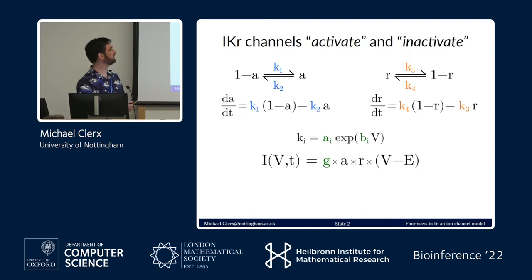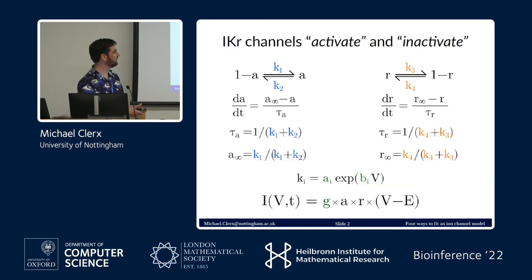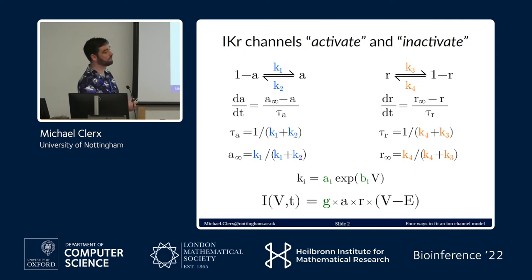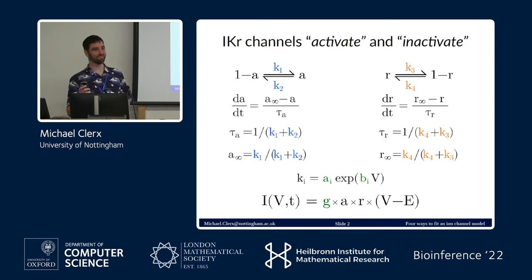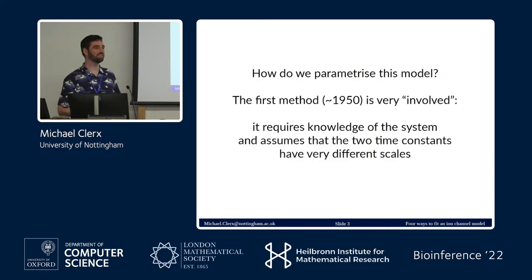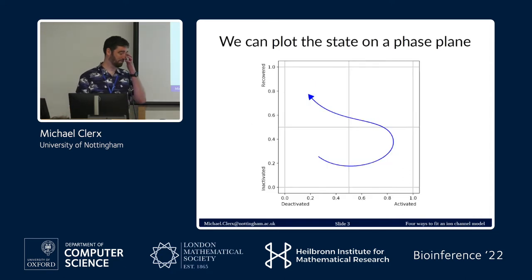There's a nicer way to write this — you can rewrite the ODEs with a time constant and a steady-state value. These ODEs are easier to understand: if A is bigger than its steady-state value it will shrink, if smaller it will grow, and the time constant either speeds up or slows it down. I'm going into such depth about the model because the first inference method I'm going to show is a pen-and-paper one that people have been doing for ages, which lets you find parameters and work backwards.